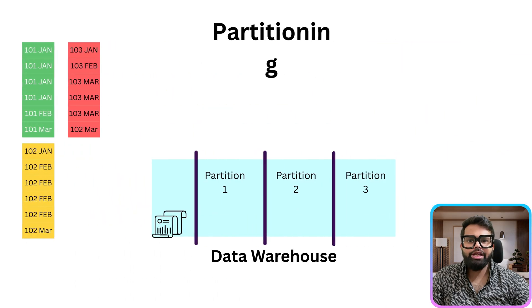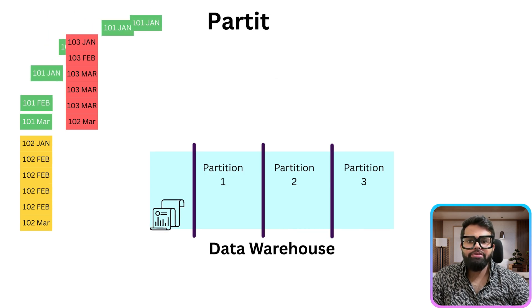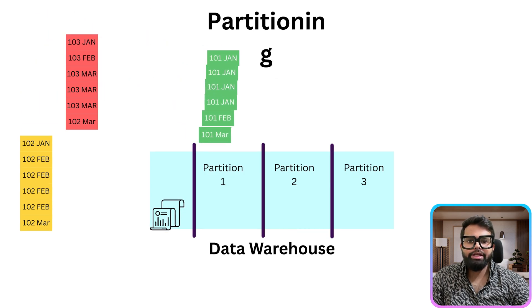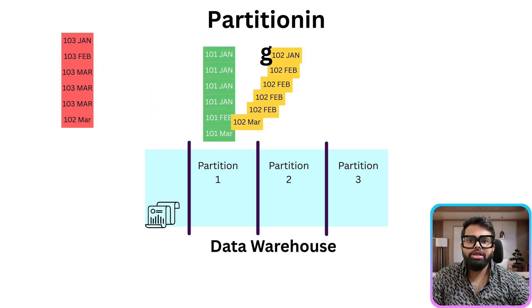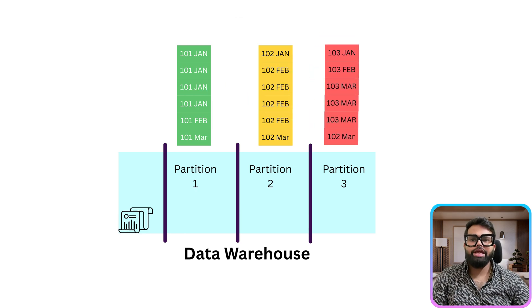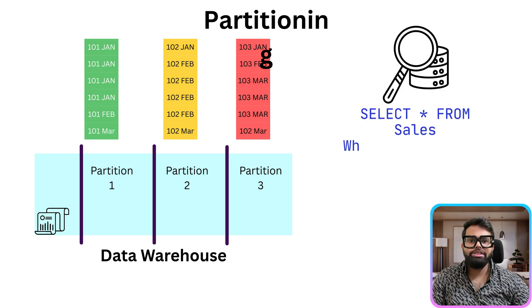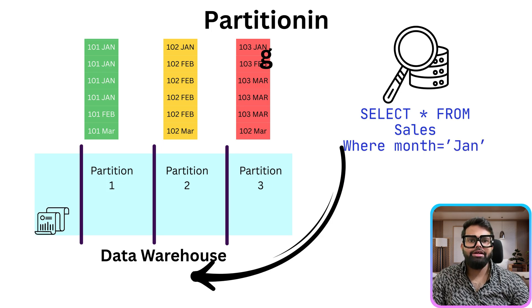The first thing the data warehouse does is distribute the data into logical partitions based on the partition key. So it places January data into the January partition, February data into the February partition, and March data into the March partition. This is crucial for query efficiency. The system can skip entire partitions during query execution through partition pruning. If a query only needs January data, it skips scanning other partitions and reads only the January group.